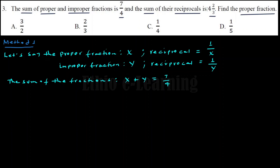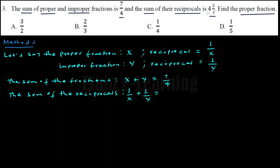The sum of the reciprocals is 4 and 2 thirds. Converting the mixed fraction to an improper fraction: 4 and 2 thirds equals 14 over 3. So 1 over x plus 1 over y is equal to 14 over 3. That is equation two.